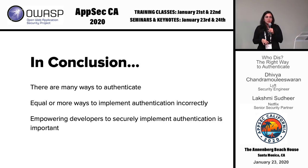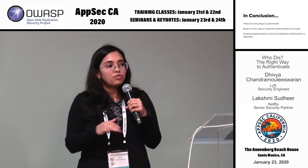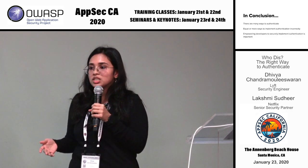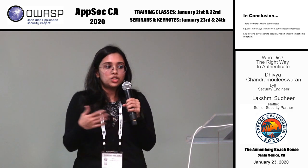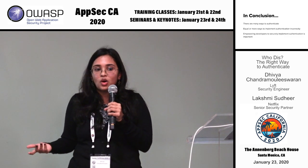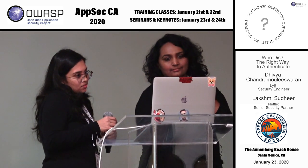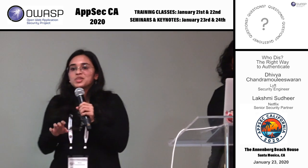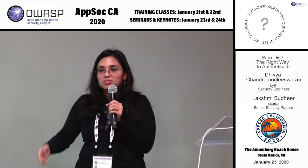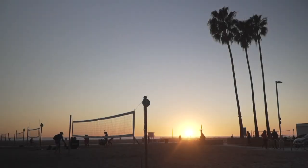To summarize: there are many ways to authenticate and many ways to implement them incorrectly, but the problems can be categorized into two buckets — context-specific and protocol-specific. The focal point is that security engineers and security-conscious developers need to be empowered to make secure choices to ensure authentication is implemented correctly. The demo code is available on GitHub if you want to see it in action.